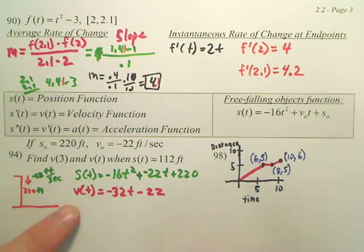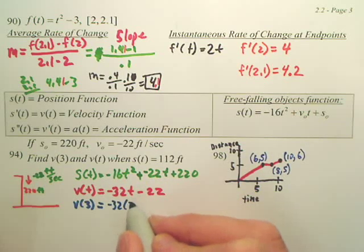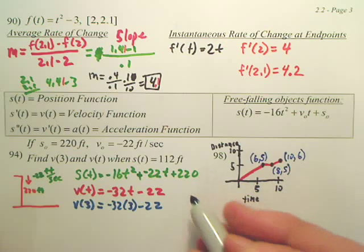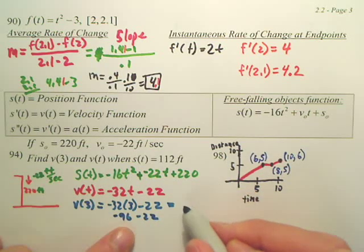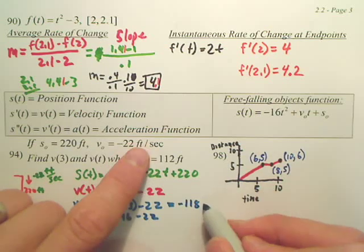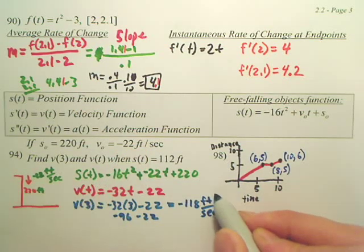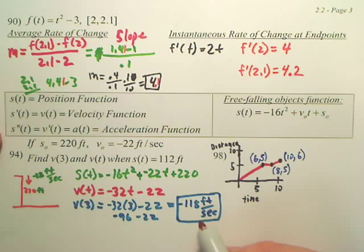Now, looking at that, don't I want v of three? So don't I just plug in three? So what is my velocity at three? Well, this would be negative 96 minus 22, which is negative 118. And velocity, according to the information, is in feet per second. So that's v of three. That's the velocity at three seconds. That's how fast it's going. Gravity is going to keep pulling down faster and faster and faster. We're more familiar with miles per hour. It's using feet per second.